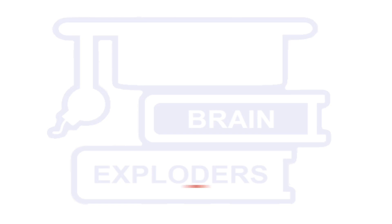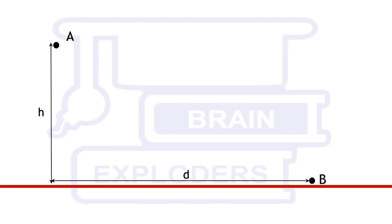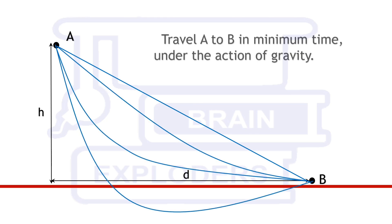Suppose there is a point A at some height from the ground. There is another point B which is not directly below A. You have to make a frictionless slide or curve from A to B. You are free to choose the shape of the curve. It can be any curve from a straight line to a shape taking a turn below the ground surface. The problem is to find the equation of curve such that any object slides from A to B in shortest possible time.